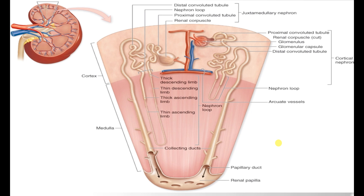That concludes our anatomy and histology of the kidney. Looking at this picture, you should be able to explain what innervates the kidney, what supplies it, what drains it, and how a nephron is built up. Thank you for listening, and I hope to see you in the physiology video.